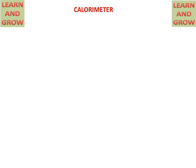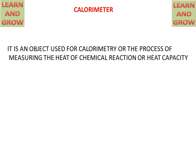Today we will discuss about bucket calorimeter or barrel calorimeter. Firstly, we will discuss about what is a calorimeter. It is an object used for calorimetry, or the process of measuring the heat of chemical reaction or heat capacity, is called a calorimeter. By which we can measure the heat capacity is called a calorimeter.